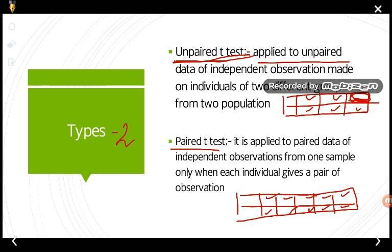The unpaired t-test is applied to unpaired data of independent observations made on individuals of two different groups from two populations. The paired t-test is applied to paired data of independent observations from one sample only, where each individual gives a pair of observations.